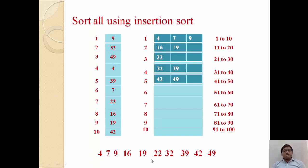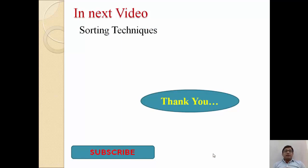This is all about bucket sort. To summarize: first we have a list of numbers and partition them into different buckets, where every bucket has some range. Based on that range we store elements inside the bucket. Then we apply insertion sort to every bucket so the elements within each bucket are in ascending order. Finally, we read the buckets in sequence to get the full list in ascending order. In the next video we will continue with the same sorting techniques. Thank you very much.